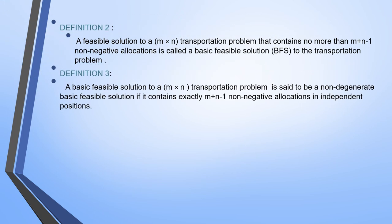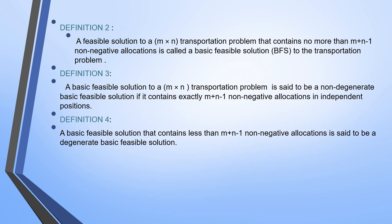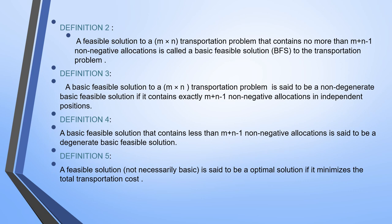Definition 3: A basic feasible solution is said to be a non-degenerate basic feasible solution if it contains exactly m plus n minus 1 non-negative allocations in independent positions. Definition 4: A basic feasible solution that contains less than m plus n minus 1 non-negative allocations is said to be a degenerate basic feasible solution. Definition 5: A feasible solution is said to be an optimal solution if it minimizes the total transportation cost. Therefore, the main concept of the transportation problem is to obtain the minimum transportation cost for transferring goods from each source to each destination.